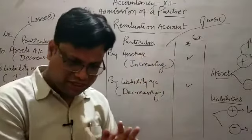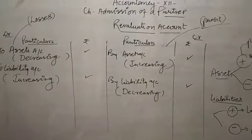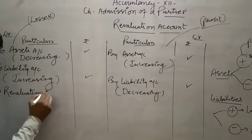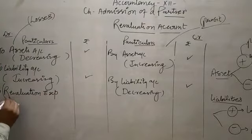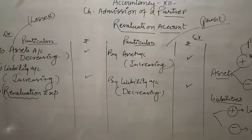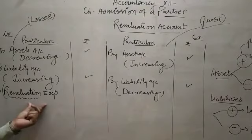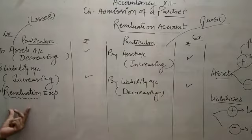Where does the profit come from? The credit side. Sometimes in a question, there is revaluation and reassessment expenses given. If there are expenses for revaluation or reassessment, you can show those expenses in the Revaluation Account. The respected partner will pay for revaluation expenses.